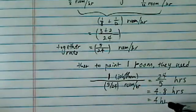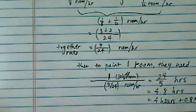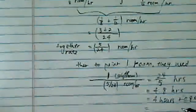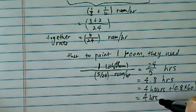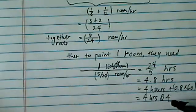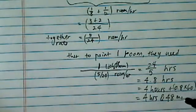Which is really 4 hours, plus 0.8 hours times 60, it will convert into the minutes. So, they can finish painting in 4 hours and 48 minutes.